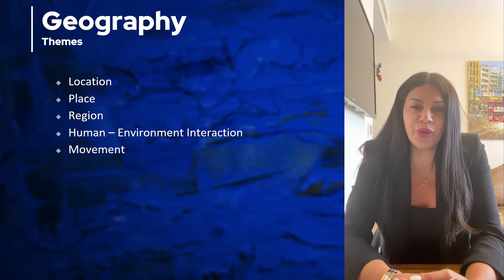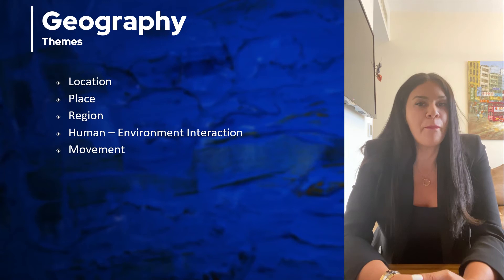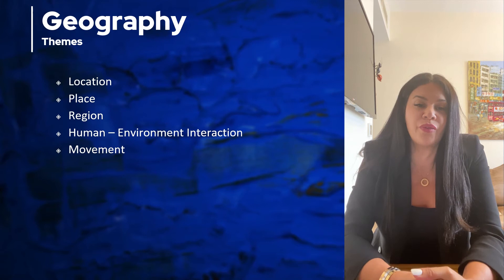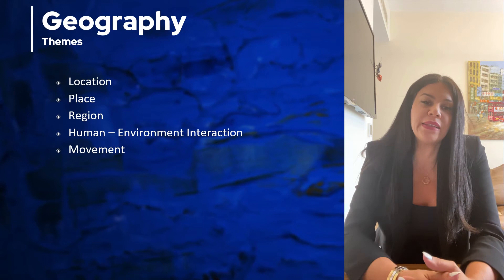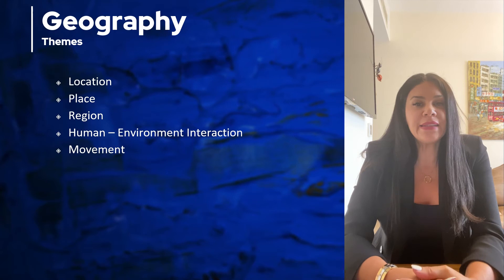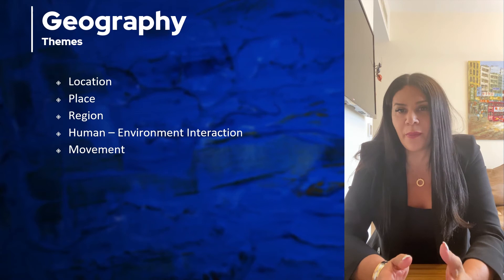Geographers, to study these elements of the world, use several different tools like charts, maps, GIS, and something known as the five themes of geography. The five themes of geography are: location, place, region, movement, and human-environment interaction. In this lesson, they also provide a useful way to introduce some of the basic concepts of geography.